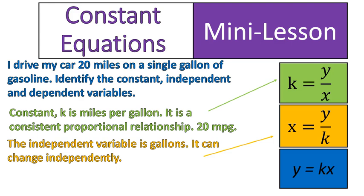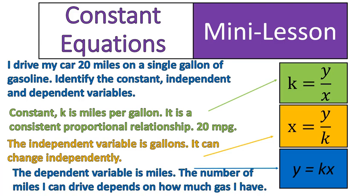The independent variable is gallons. It can change. The number of gallons can change as much as it wants, and it will force the dependent variable to change. The dependent variable is miles. The number of miles I can drive depends on how much gas I have. But the amount of gas I have does not depend on how many miles I drive. See how that works? One depends on the other. The other can change independently, and it doesn't really rely on the first. In other words, I can fill up my gas tank, and that doesn't make me have to drive more miles. But the amount I can drive completely depends on how much gas I have.